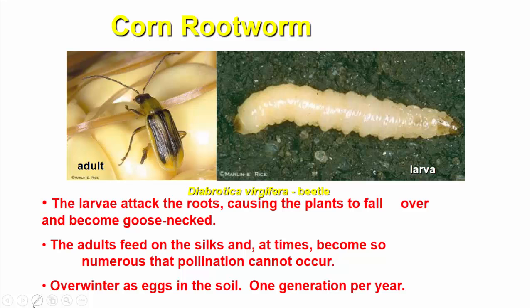Corn rootworm is a pest that affects the root. As shown in this picture, the adult is a corn rootworm. It is the larva. The adult affects via the larva stage. The larva attacks the root, causing the plants to fall over and become goose-necked.